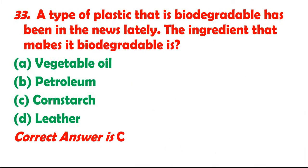Question 33: A type of plastic that is biodegradable has been in the news lately. The ingredient that makes it biodegradable is: A. Vegetable oil. B. Petroleum. C. Cornstarch. D. Leather. Correct answer is C.